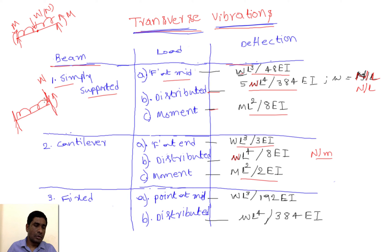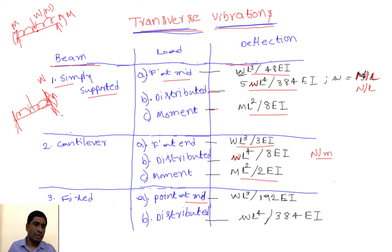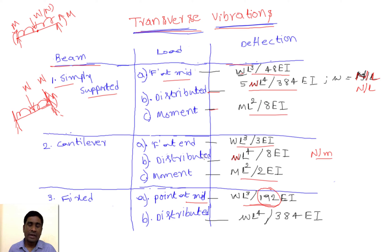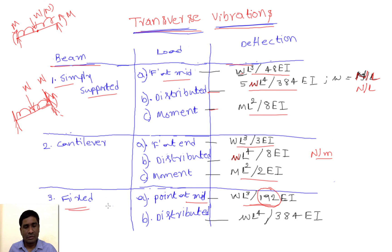For a cantilever, one end is free; in a fixed beam, both ends are fixed. For a fixed beam with a point load at midspan, there is a specific formula. This case is very common in problems because whenever we consider a shaft between bearings, we generalize it to either simply supported or fixed. If the length of the shaft between bearings is very large, it is considered simply supported; if the length is short, it is considered fixed.